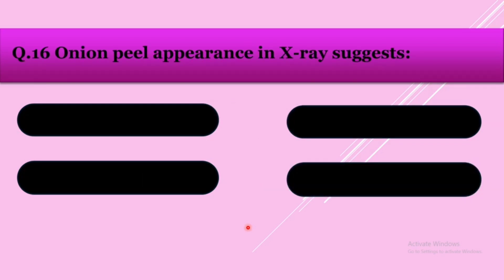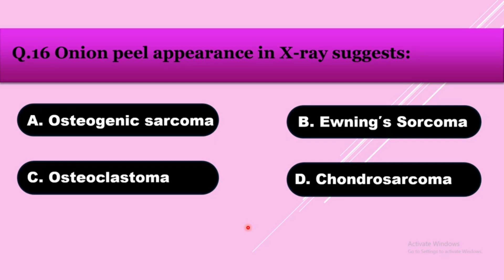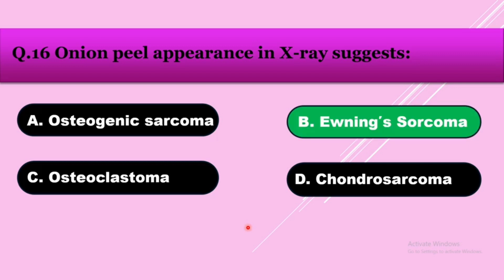Question number sixteen: The onion peel appearance in X-ray suggests — option A: osteogenic sarcoma, option B: Ewing sarcoma, option C: osteoclastoma, option D: chondrosarcoma. The onion peel appearance is seen in Ewing sarcoma.